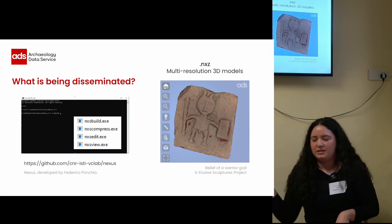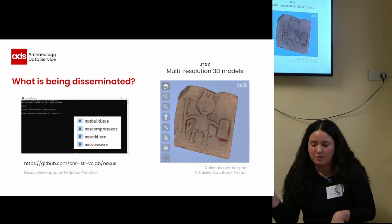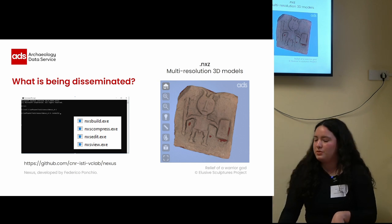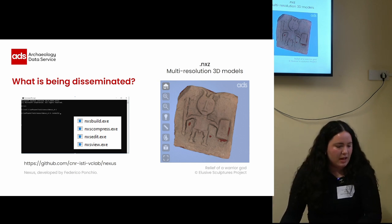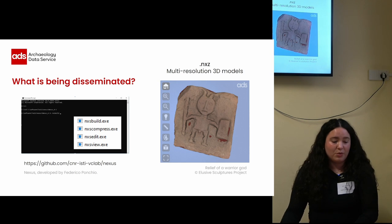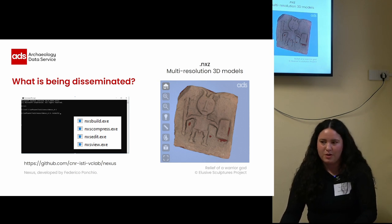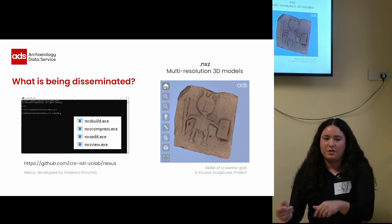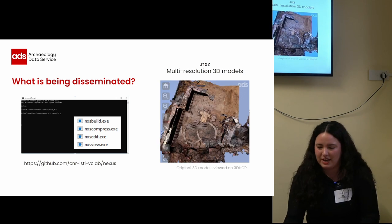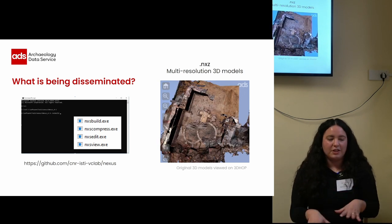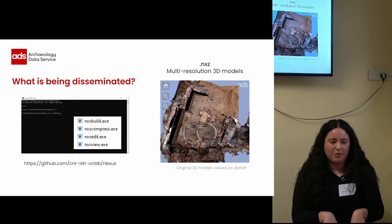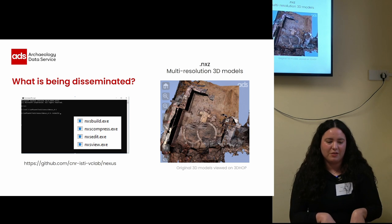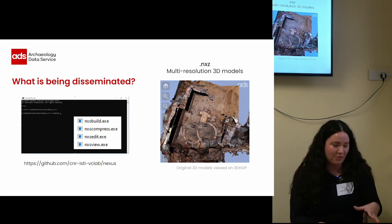This is an example of a 3D model from the Elusive Sculptures project. However, when viewed on 3D Hop, the 3D models from the Curzon Street Station looked more like this. So not exactly what we want for the archive of a high profile site.